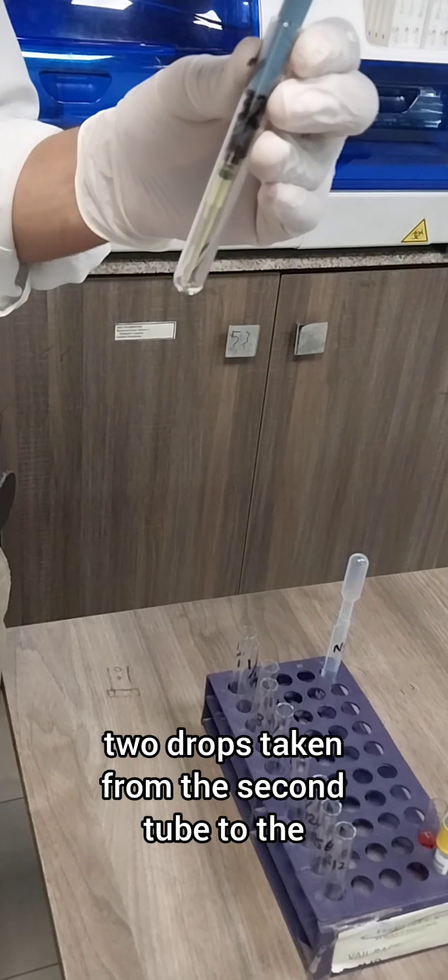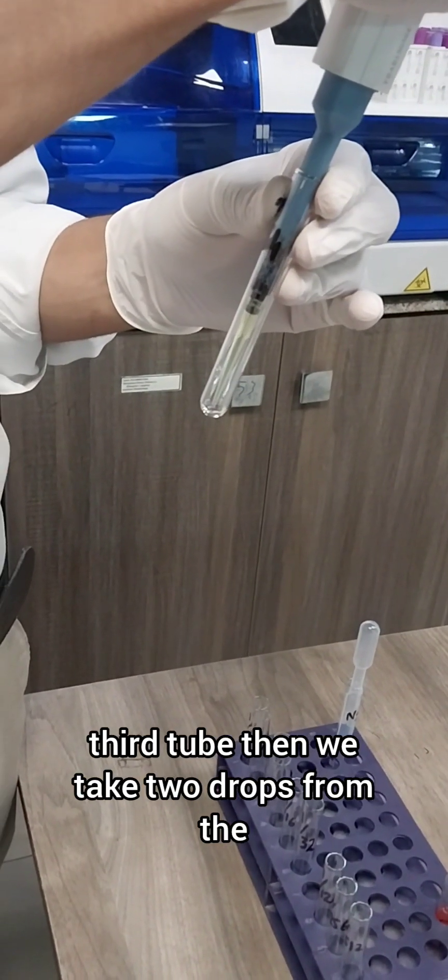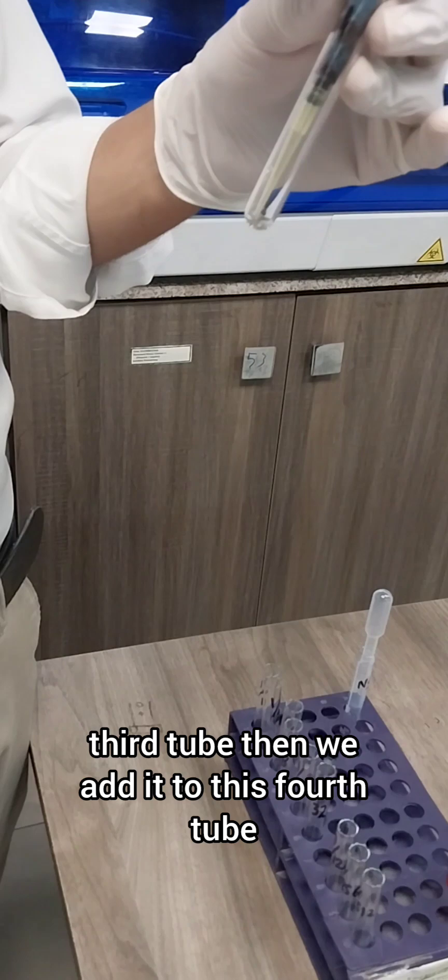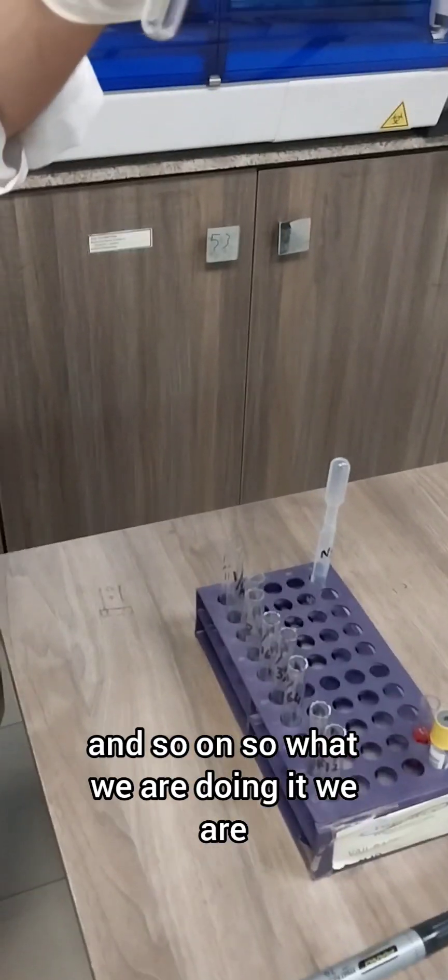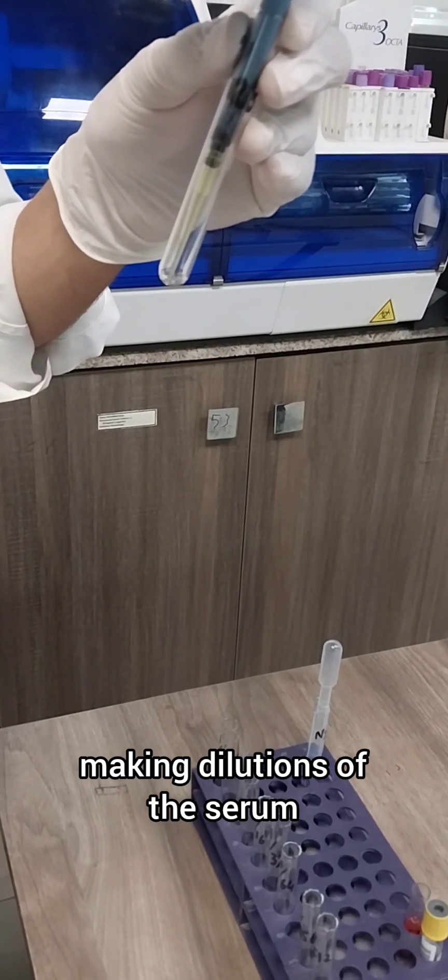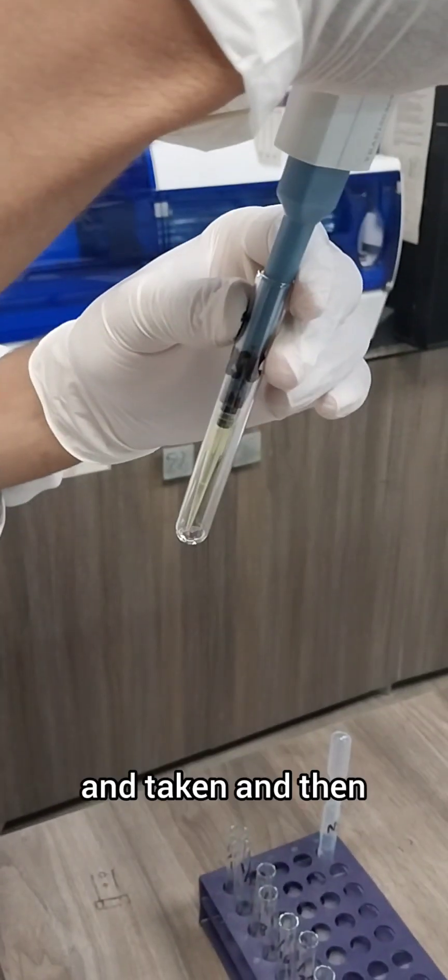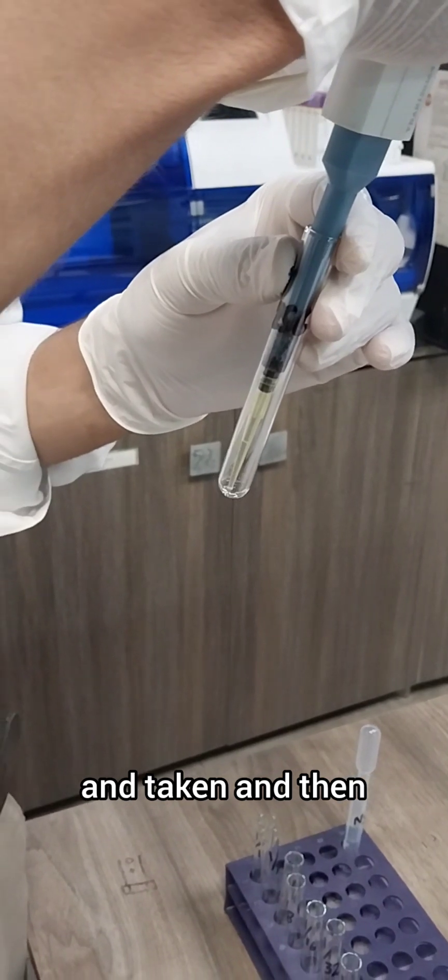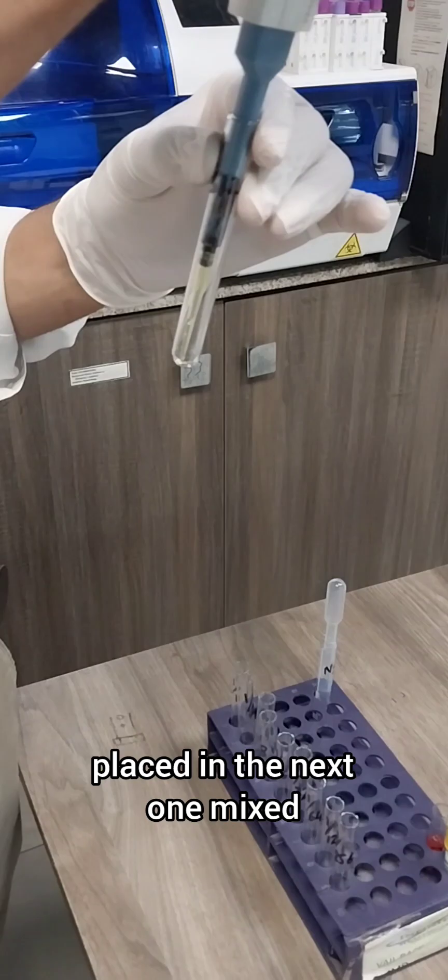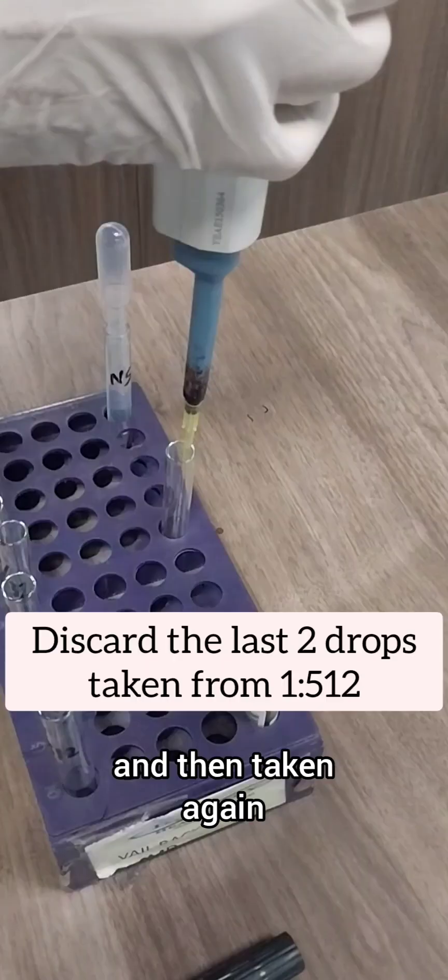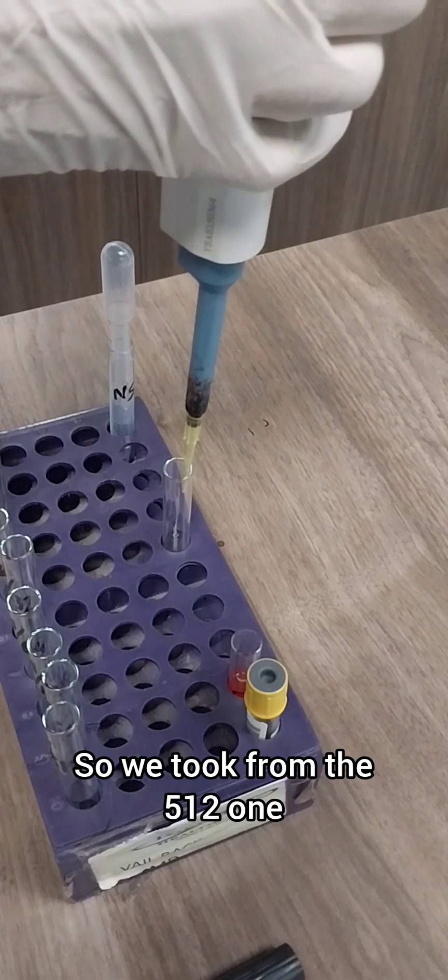From the next tube onwards, we are just going to transfer two drops taken from the second tube to the third tube, then we take two drops from the third tube and add it to the fourth tube, and so on. We are making dilutions of the serum. You can see we are using a pipette, taken and placed in the next one, mixed and then taken again. We discard the last two drops from the 512 tube.